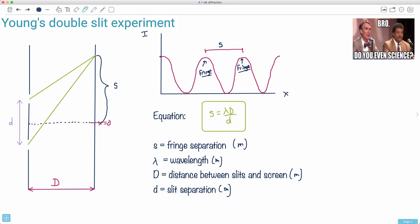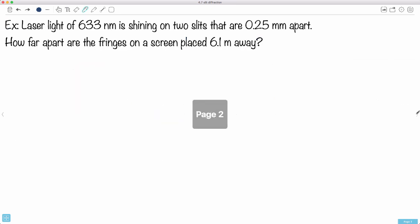Let's do an example. This looks very much like what you'd see on an exam. You have laser light of 633 nanometers shining on two slits that are 0.25 millimeters apart. How far apart are the fringes on a screen placed 6.1 meters away?